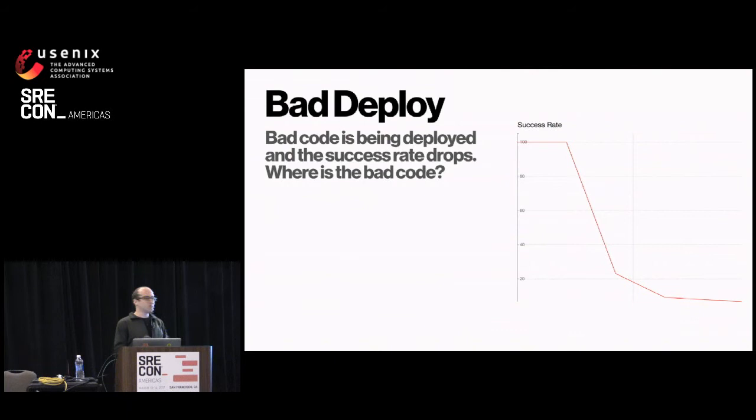So whatever your success rate or metric is, it starts dropping way down. In this case, this is actually from a recent issue we had — it went down to 20%. Oh god, what just happened, what do we do, who wrote the bad code, where is it?